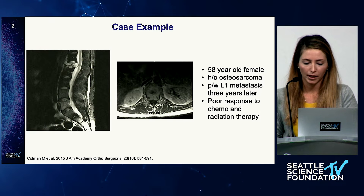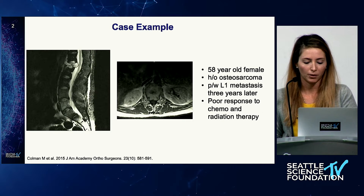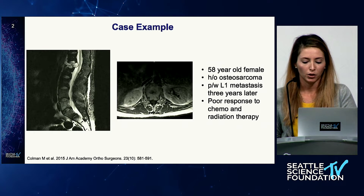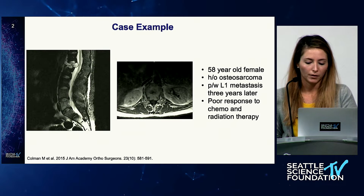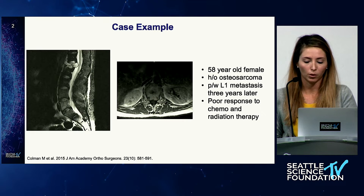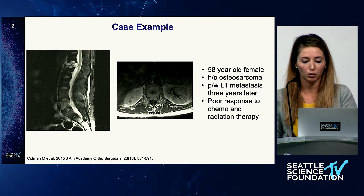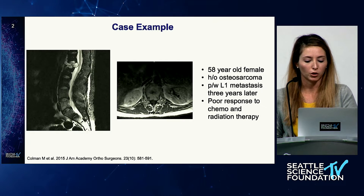So this is a typical scenario: a woman that had osteosarcoma and who presented with an L1 metastasis. You would do an en bloc spondylectomy for a resection. One of the things you have to think about is that you would do a 360 exposure. You have to be aware of the segmental vessels that supply the cord, especially the artery of Adamkiewicz. And then what do you consider for surgery? Do you do a pre-op angio to identify the blood supply?